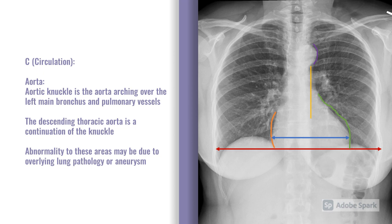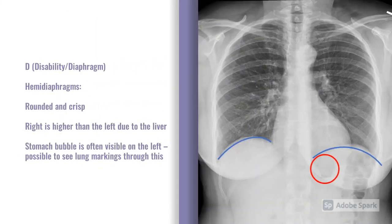Moving on to D — disability/diaphragm. We're looking at the hemi-diaphragms; they should be relatively smooth. The right is often a little higher than the left. Sometimes you get a hemi-diaphragm that's significantly raised, and that's important to comment on — but remember the right being slightly higher is within the spectrum of normal. When you're looking at the diaphragms, also have a quick look below, as you may well see a stomach bubble, which isn't of any clinical concern.